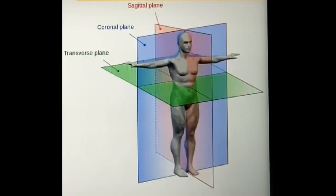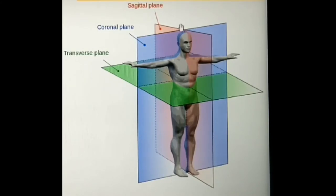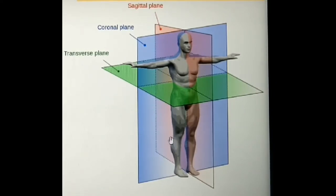Before looking into the diagram, let us understand that any object or human body can be visualized in three different planes: the sagittal, coronal, and transverse planes. The sagittal plane divides the human body into equal right and left halves through the midline — shown in red color here. The coronal plane divides the human body into anterior and posterior halves.